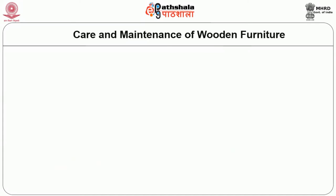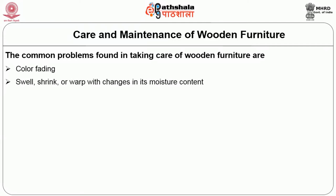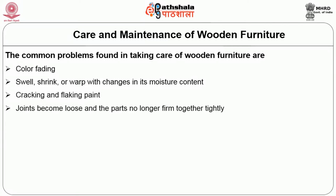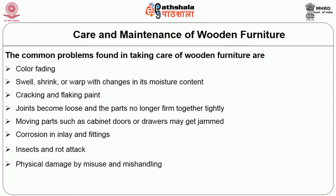When we talk about the care of furniture, preventive measures are the best form of maintenance. The common problems found in taking care of wooden furniture are color fading, wood furniture swelling, shrinking or warping with changes in moisture content, wood cracking or flaking in its paint, joints becoming loose, moving parts such as cabinet doors or drawers getting jammed, corrosion in inlays and fittings, and insect and rot attack.